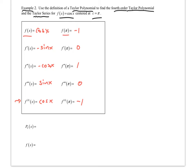If I do f of pi, cosine of pi is negative one. The sine of pi is zero, negative cosine of pi is one — actually negative one — and so on. I fill those values in. So those are the values we have.